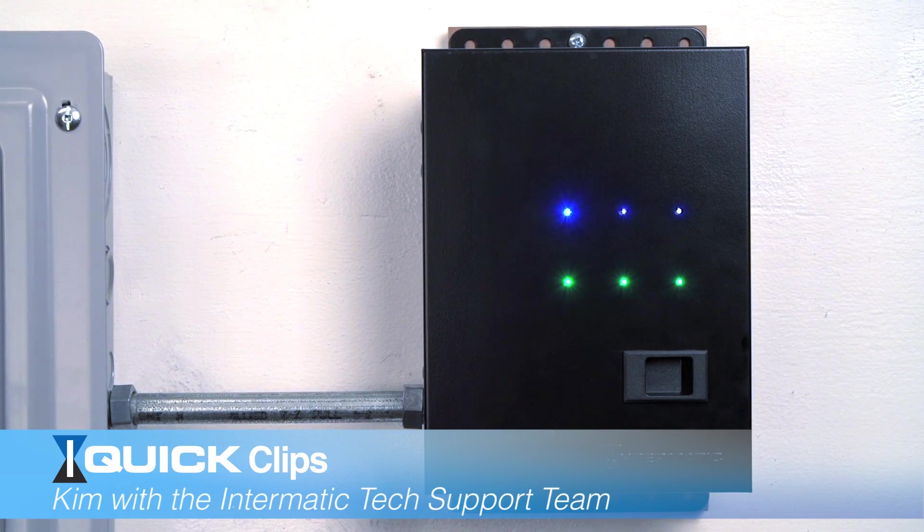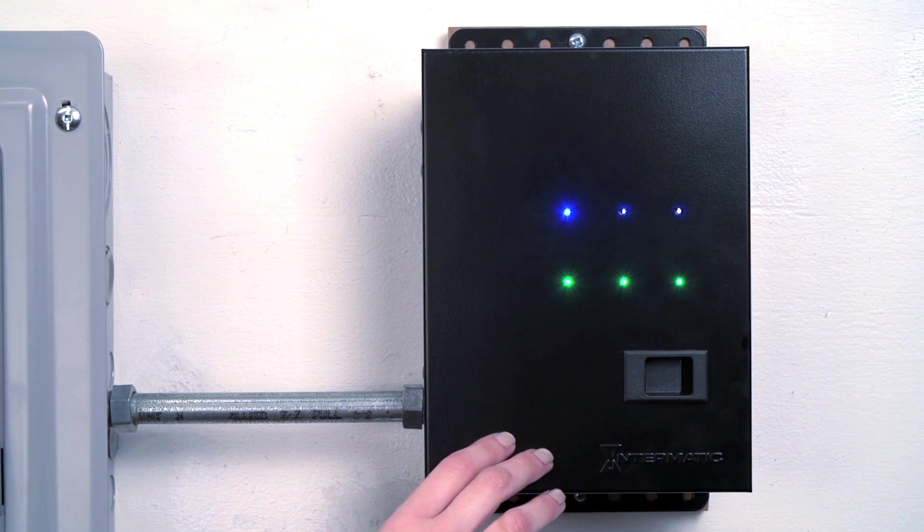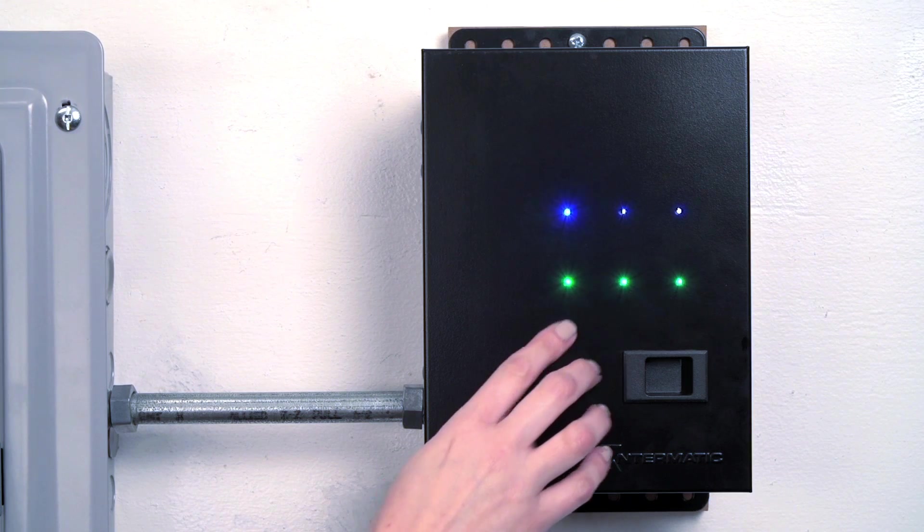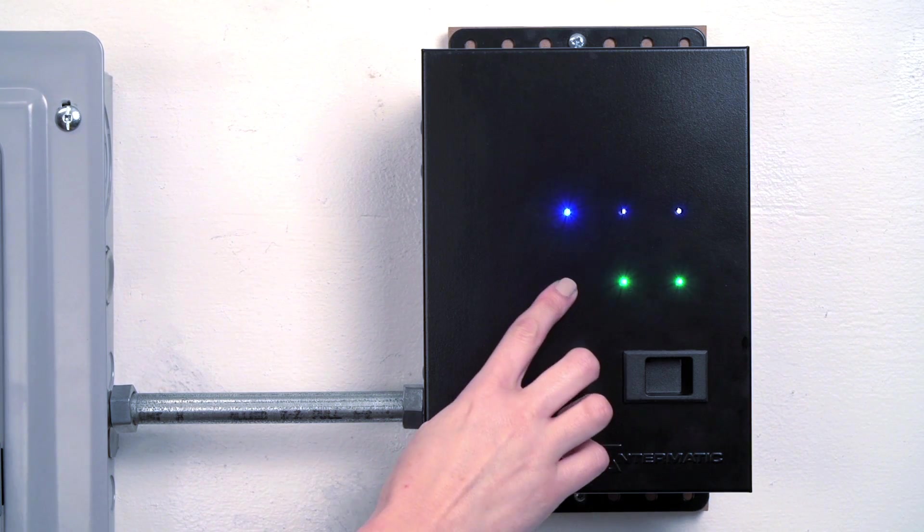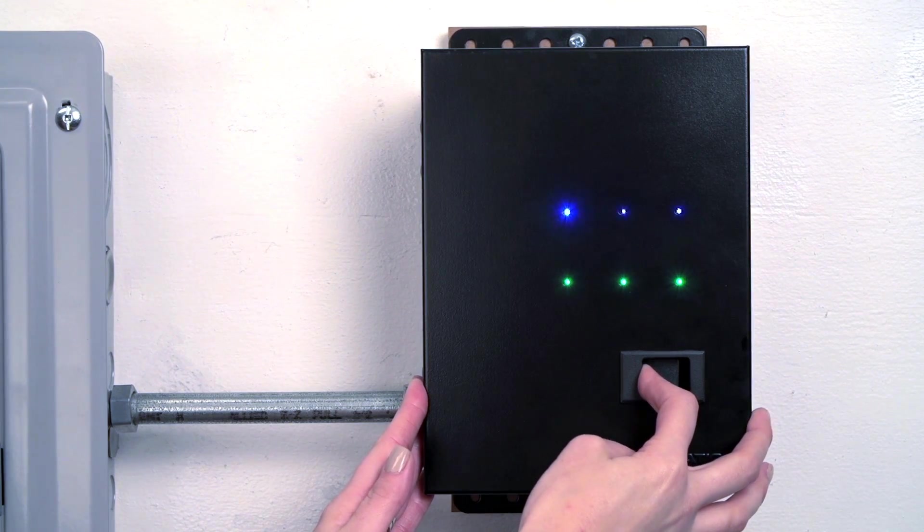It's really easy to replace a consumable module in Intermatic's Whole House Surge Protective Device with consumable modules. As you're monitoring the device on a regular basis, you may notice that one of the green LEDs is not lit. This means it's time to replace your consumable module.